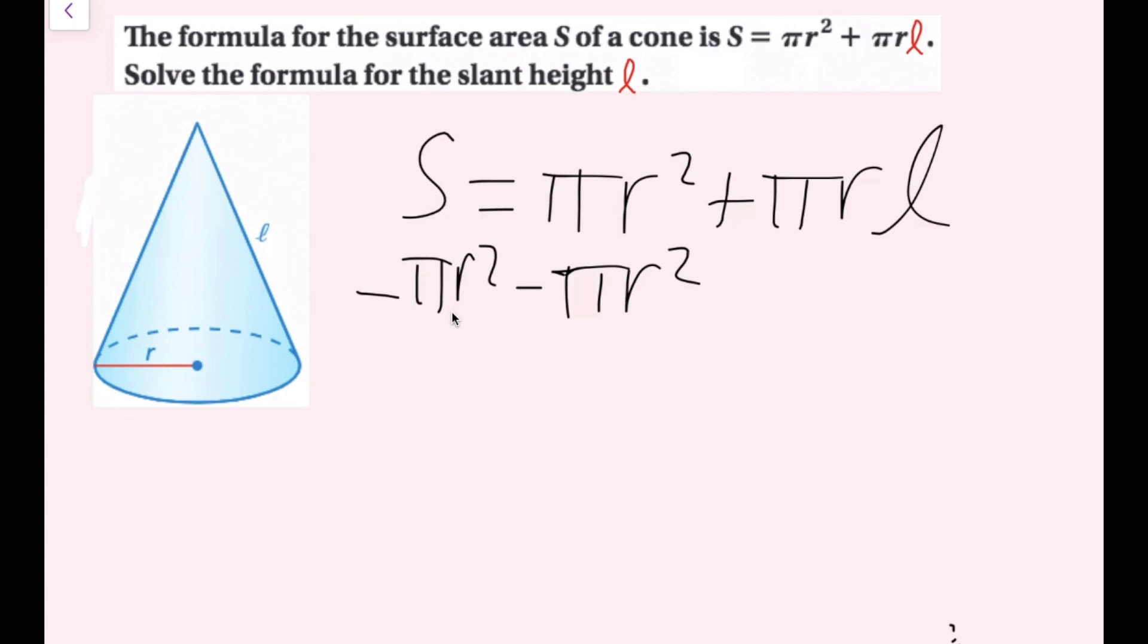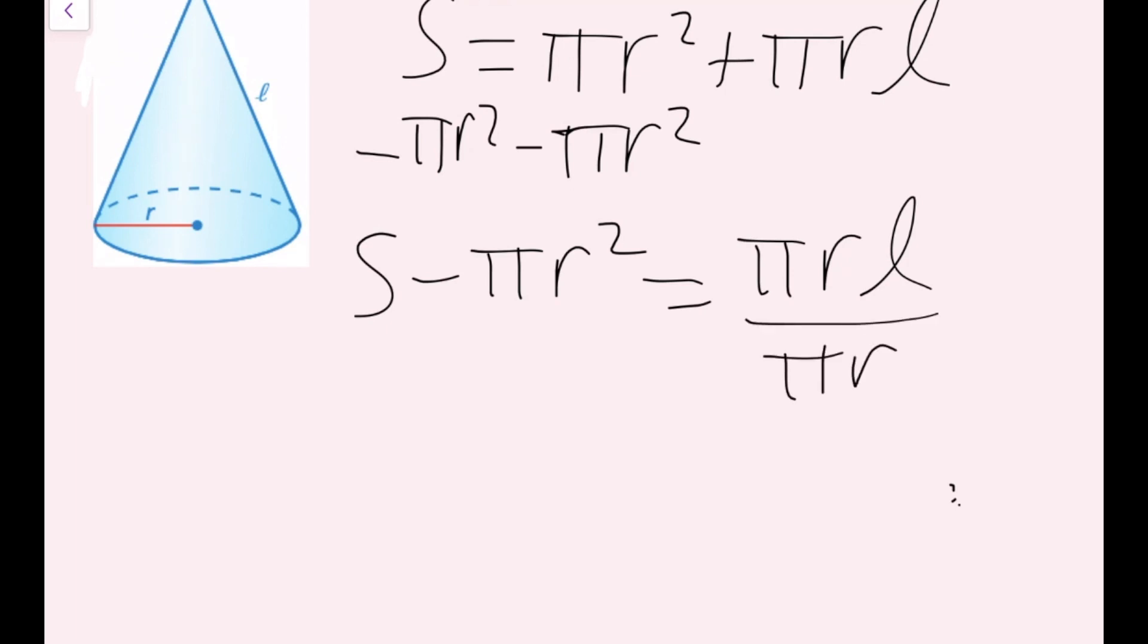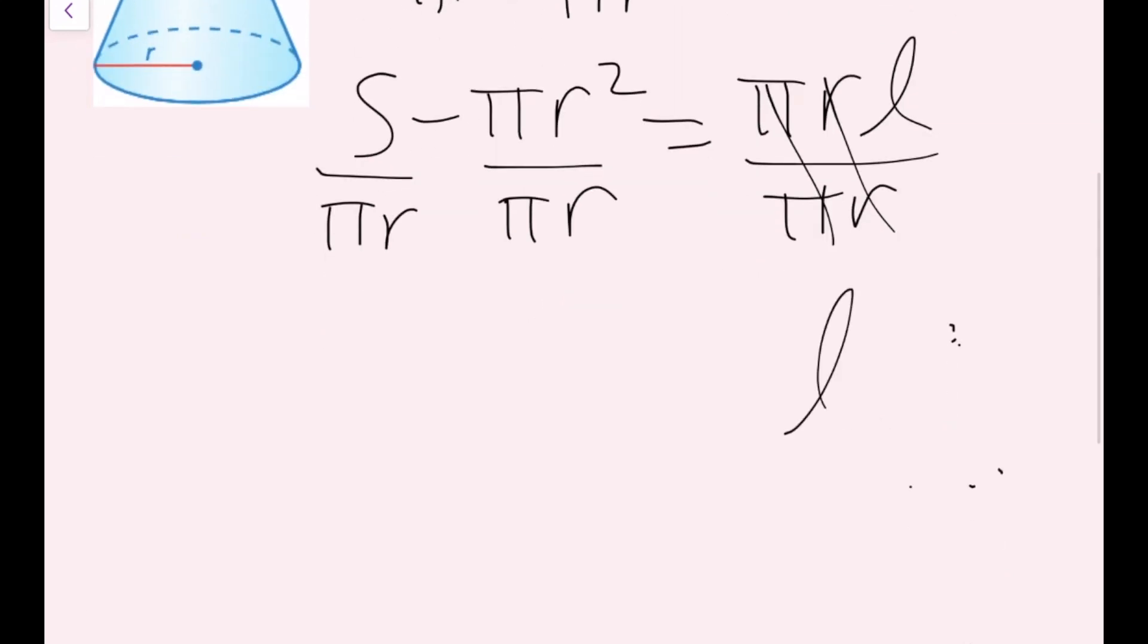Now, S and pi r squared are not like terms, so I'm just going to rewrite this like S minus pi r squared, and then bring my equal sign down. And then the only term left on the right side is pi r L. Now I only have one term on the right side, and that's pi r L. And I want to see what's happening to L. Well, I'm multiplying by r and multiplying by pi. So to cancel out multiplication by pi and r, I'm just going to divide by pi and r on both sides. And remember, dividing on both sides means divide every single term by pi and r. So I'm going to divide the S by pi and r, and I'm going to divide the minus pi r squared by pi and r.